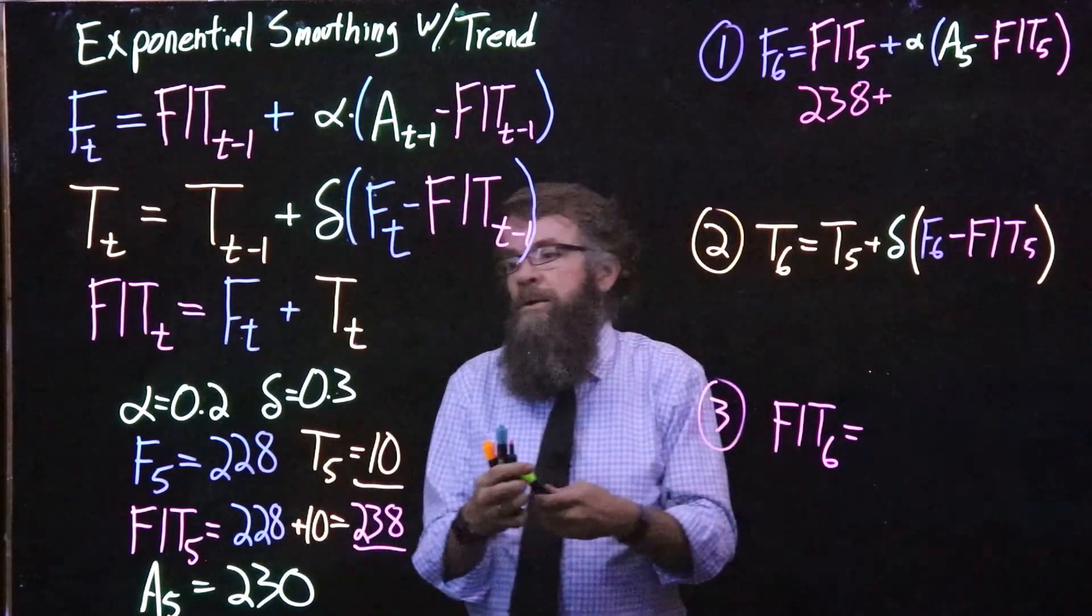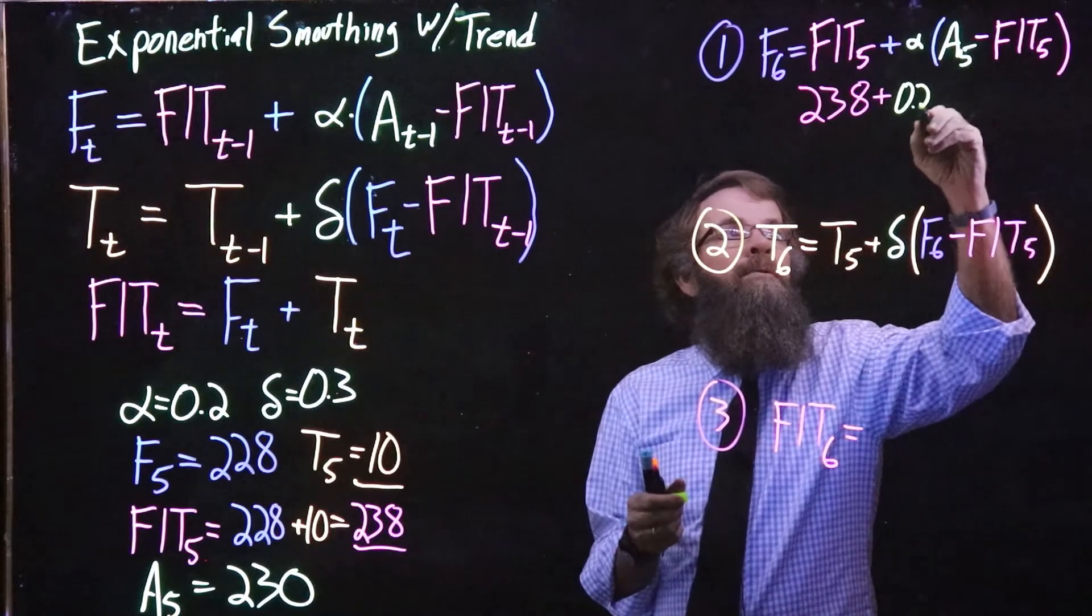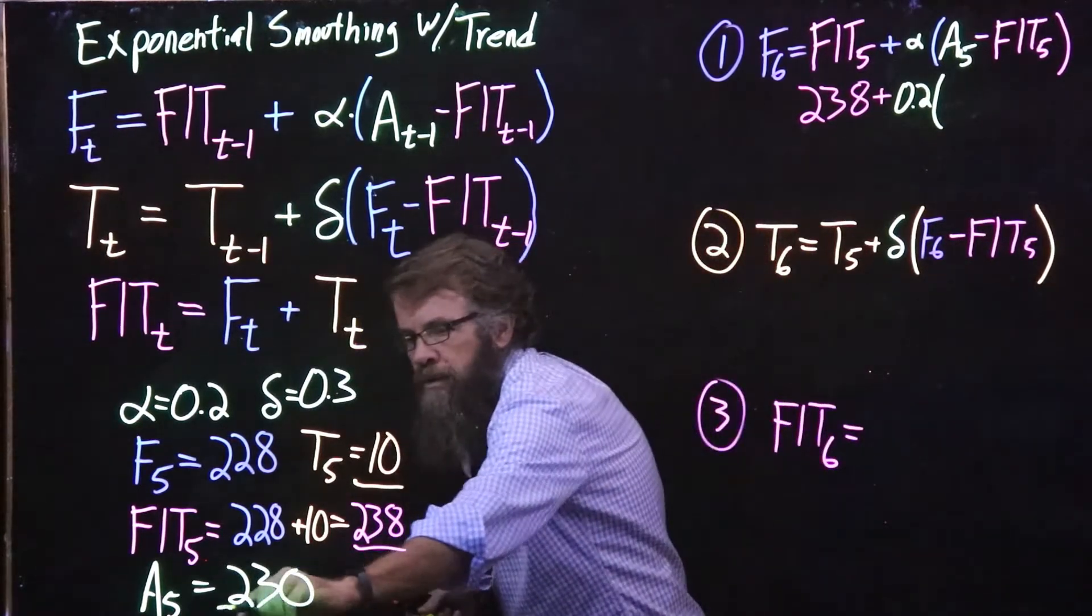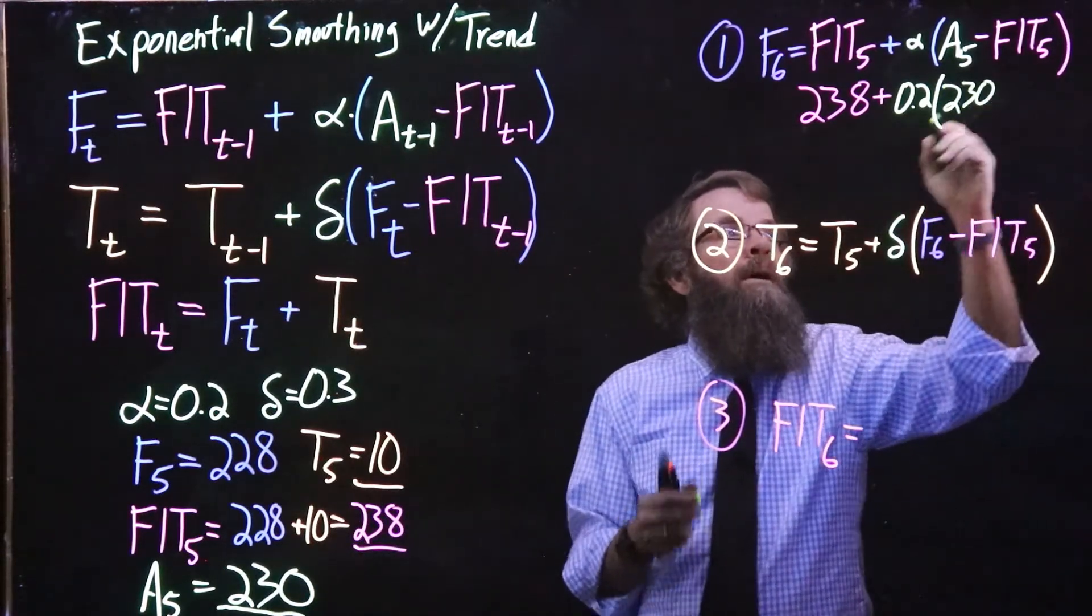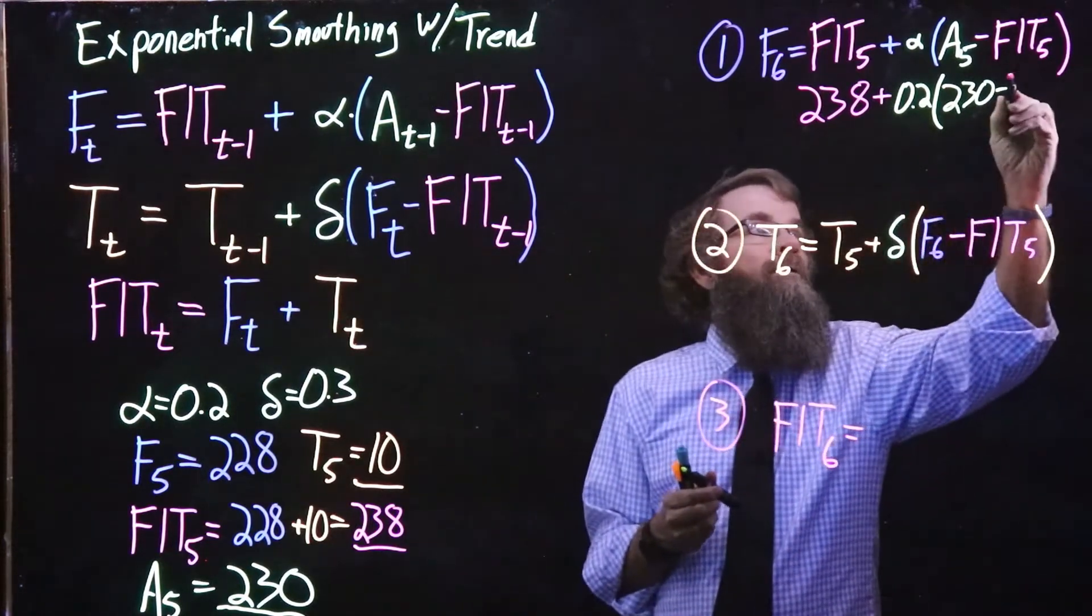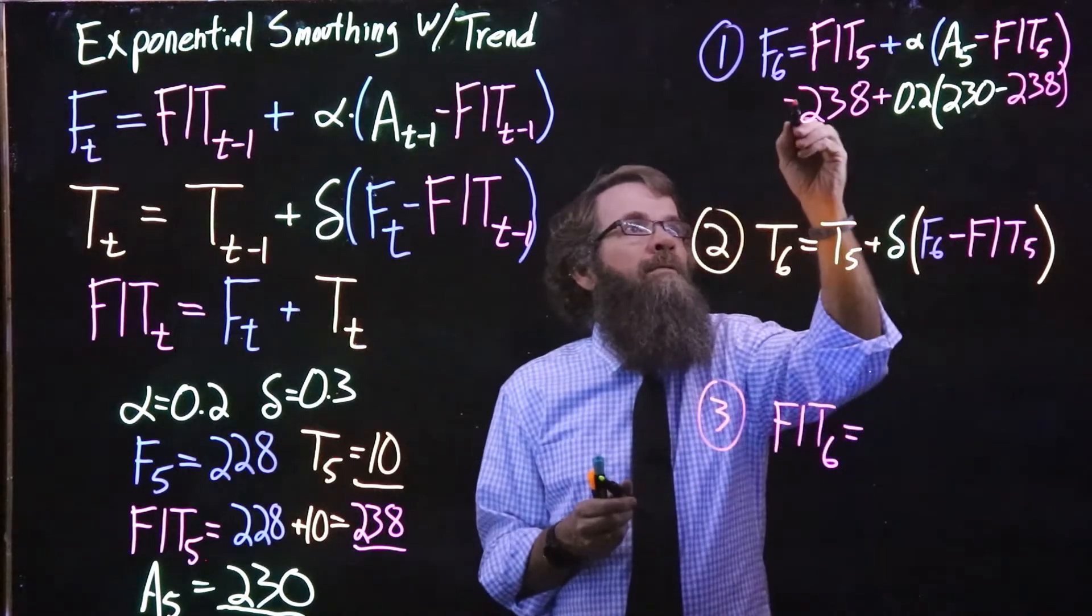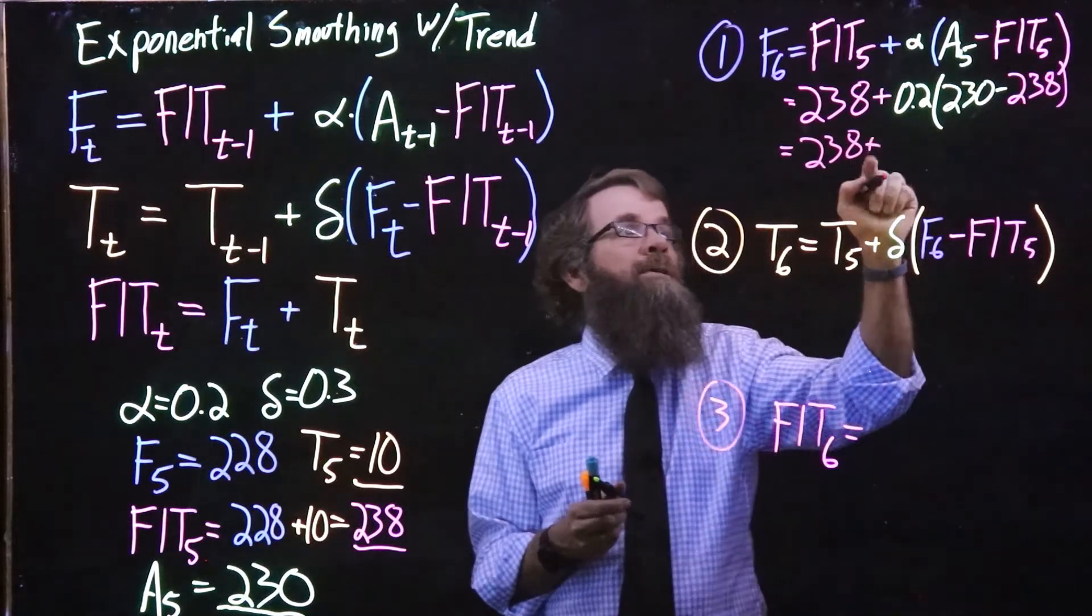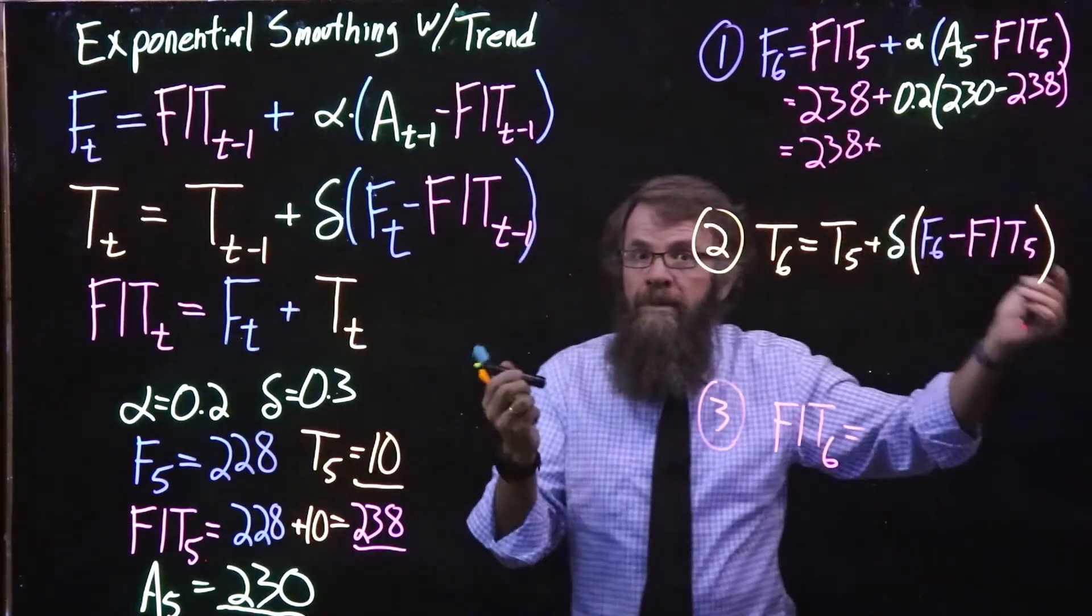We're using an alpha value of 0.2, and multiply times the actual in 5, and the actual in 5 was 230, and then we will subtract off the forecast including the trend, that 238. So we have 238 plus 0.2 times, and then we have 230 minus 238, which obviously gives us a negative 8.